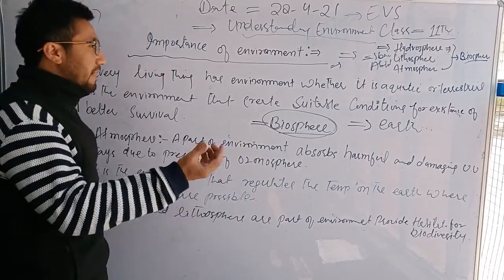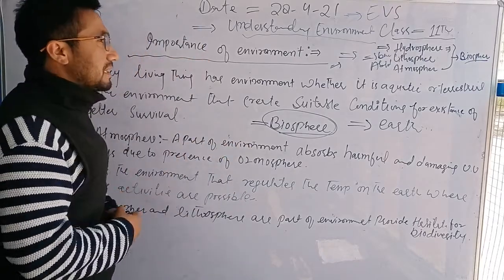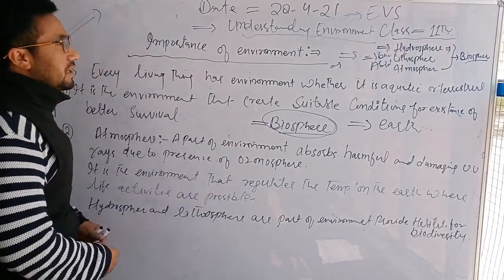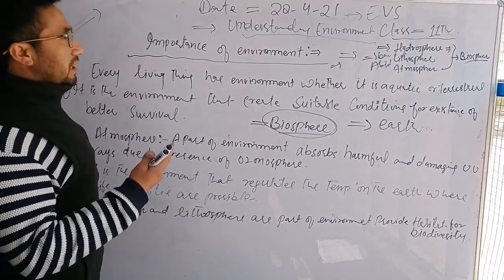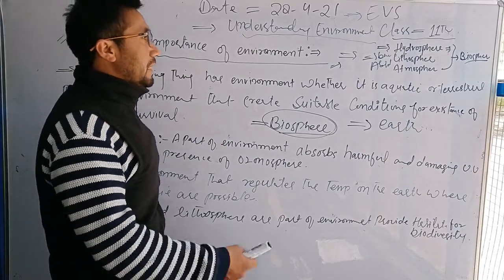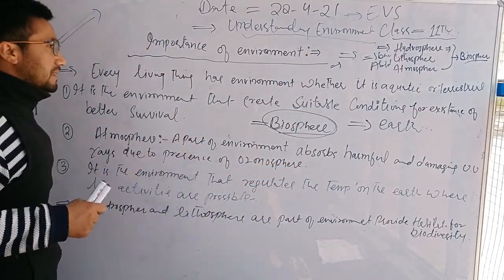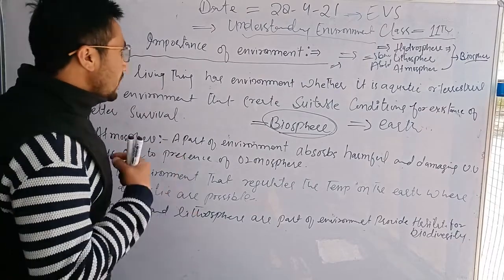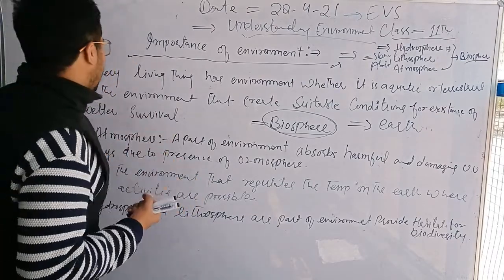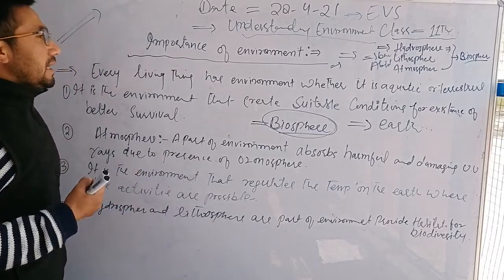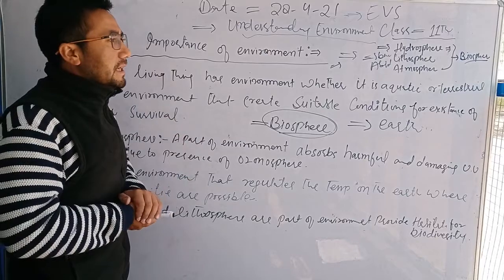In aquatic environments, we get phytoplankton, fish, and different animal species found in the aquatic region. The largest animal species and plant species are found on the terrestrial surface. We humans are one of those terrestrial animals.